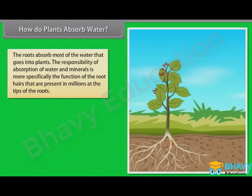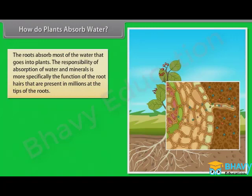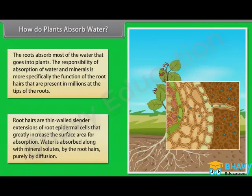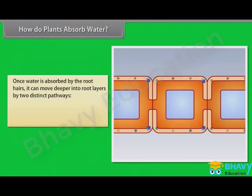The roots absorb most of the water that goes into plants. That is why we give water to the soil and not on the leaves. The responsibility of absorption of water and minerals is more specifically the function of the root hairs, present in millions at the tips of the roots. Root hairs are thin-walled, slender extensions of root epidermal cells that greatly increase the surface area for absorption. Water is absorbed along with mineral solutes by the root hairs purely by diffusion. Once water is absorbed by the root hairs, it can move deeper into root layers by two distinct pathways.